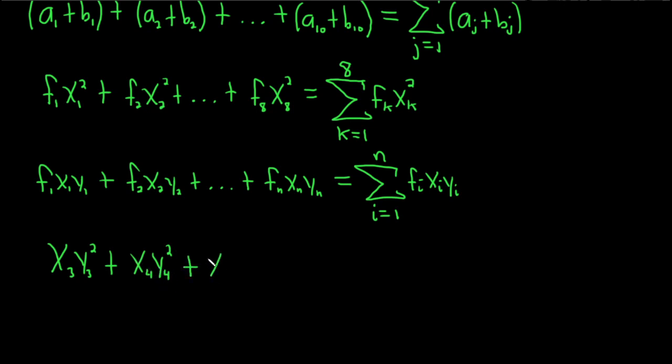Plus x sub 5, y sub 5², plus dot, dot, dot, plus x sub capital N, y sub capital N². Okay, so now it's a little bit harder where we have different variables.